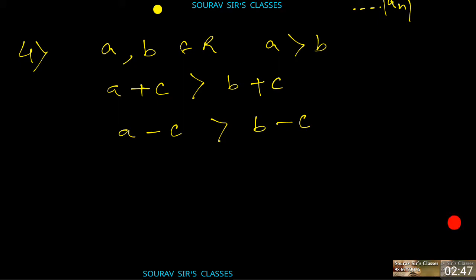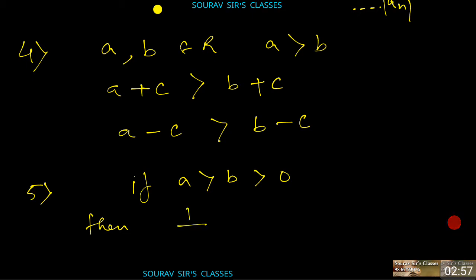Trick number five: if A > B > 0, then 1/A < 1/B. Note that if A is greater than B, when we take the inverse of both values, the inequality sign gets reversed.